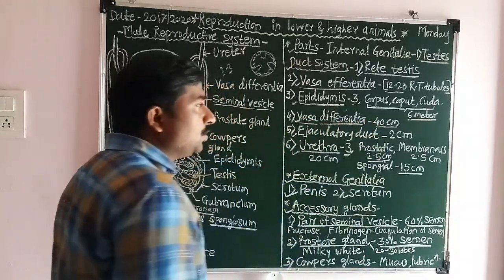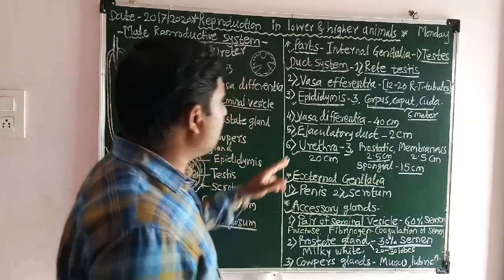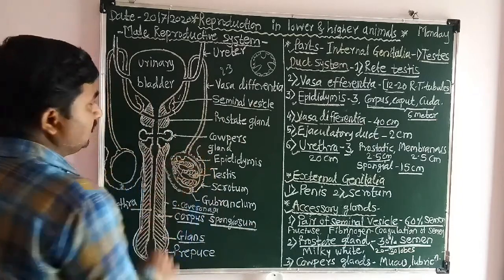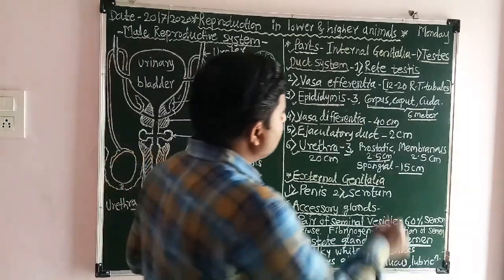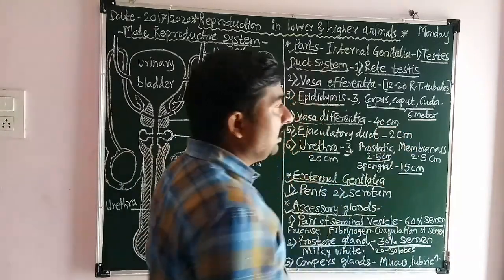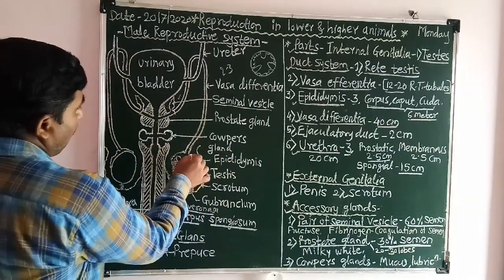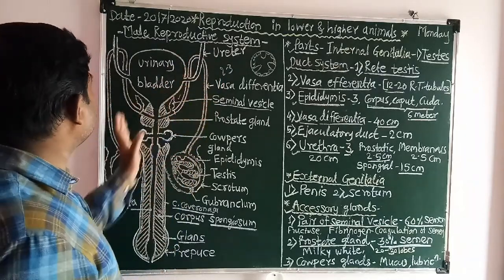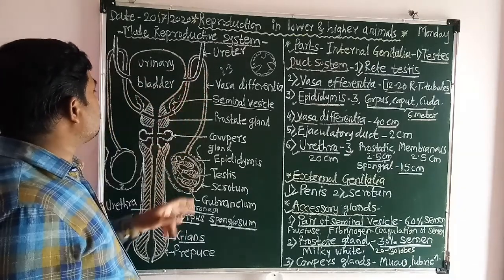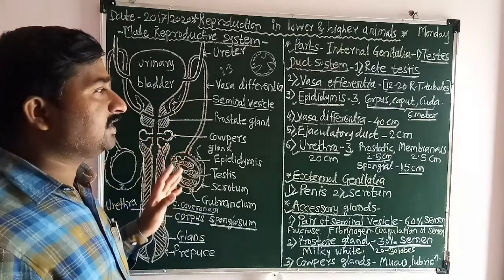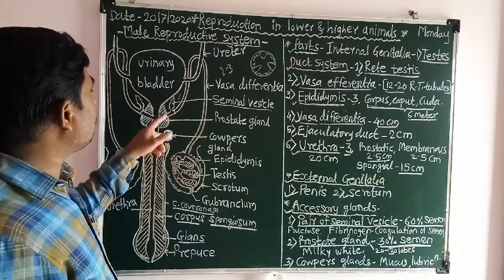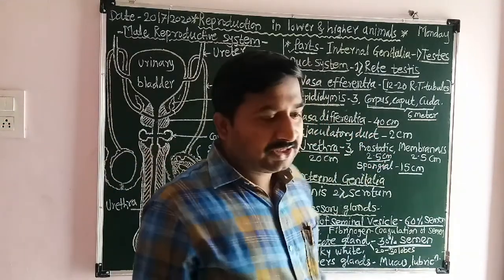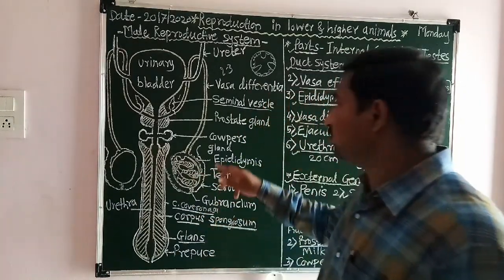The vas deferens is a paired tubular muscular structure which is about 40 centimeters in length. It starts from the cauda epididymis and enters into the abdominal cavity through the inguinal canal, and then joins to the ejaculatory duct at the duct of the seminal vesicle.